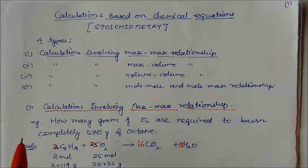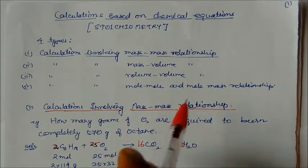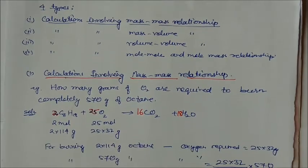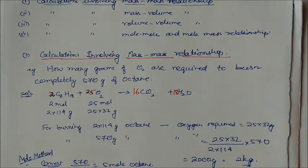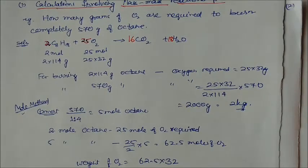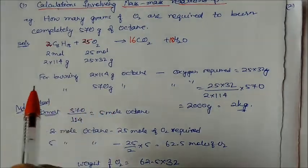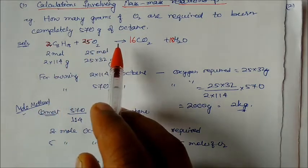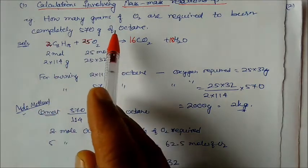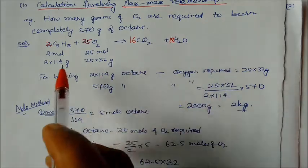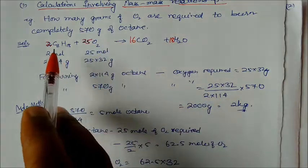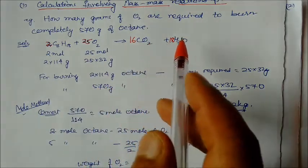Here is an example: how many grams of oxygen are required to burn completely 570 grams of octane? This is a balanced equation given. The stoichiometric coefficients are also given, and we have to solve in terms of grams only.